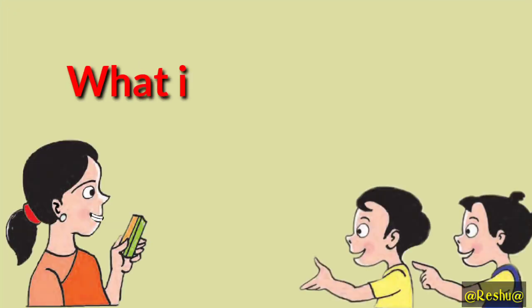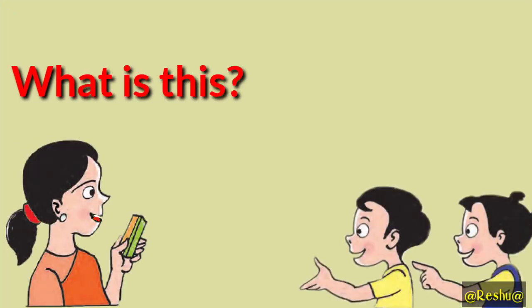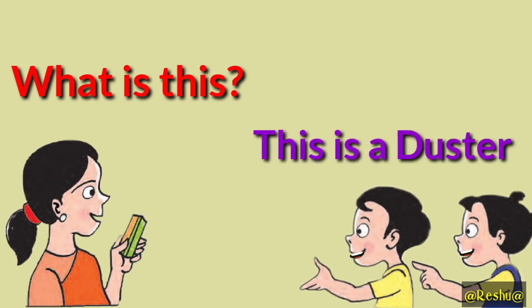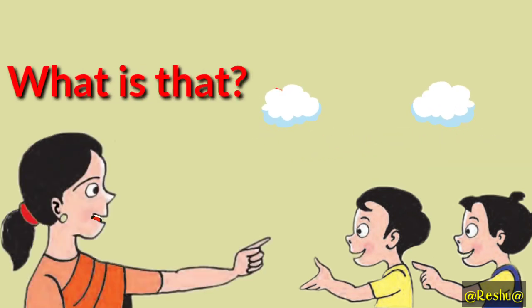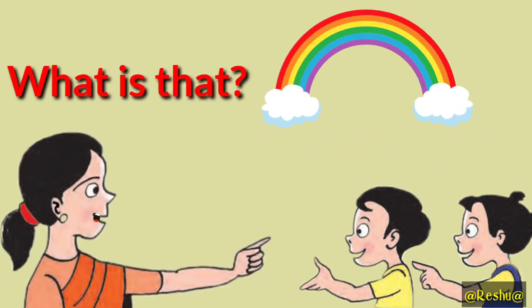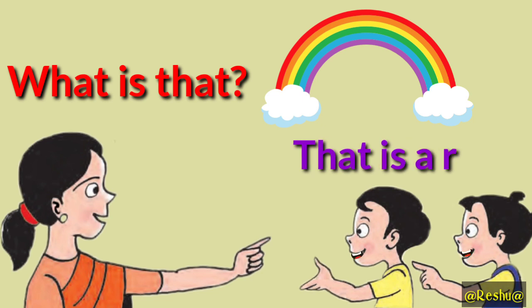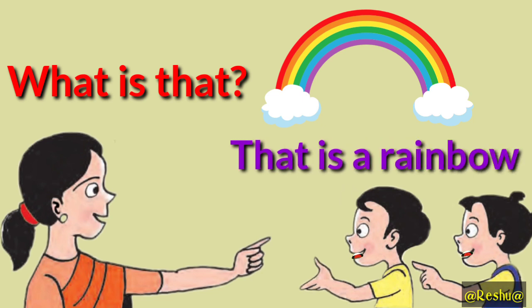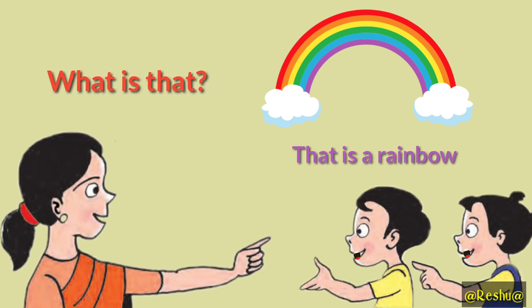What is this? This is a duster. What is that? That is a rainbow.